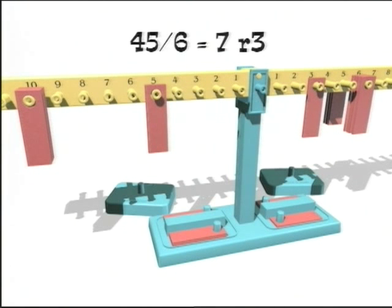The solution is then achieved by hanging weights on the sixth peg until the beam is balanced. Then one counts how many weights it took to balance forty-five. It took seven and three more. Therefore, the answer is seven remainder three.